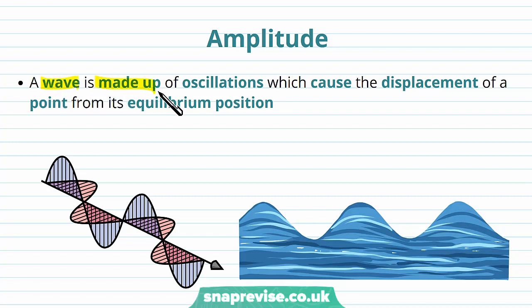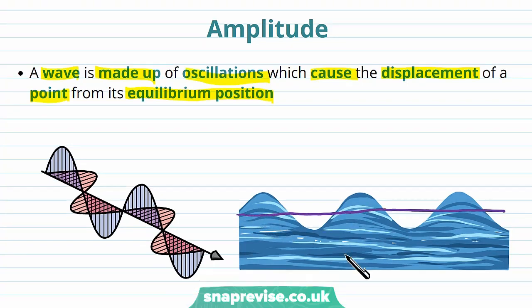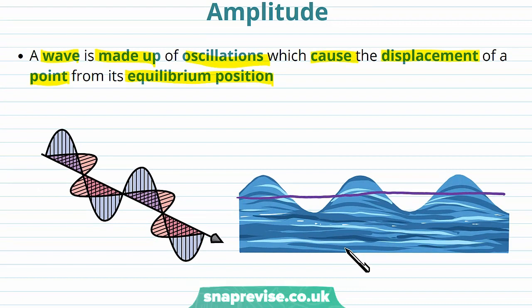A wave is made up of oscillations which cause the displacement of a point from its equilibrium position. We've looked at electromagnetic waves and mechanical waves. On both diagrams of a mechanical wave and an electromagnetic wave, we can see that there's an equilibrium position. The purple line shows the equilibrium position of the mechanical wave, and this black arrow shows the equilibrium position of the electromagnetic wave.